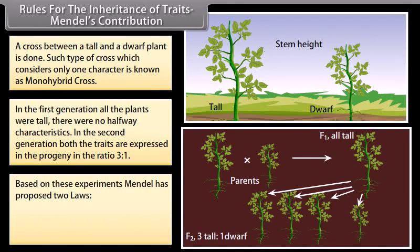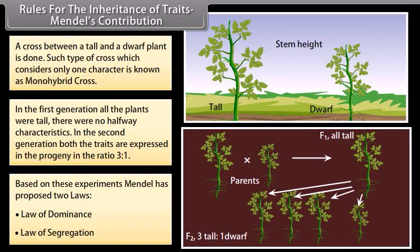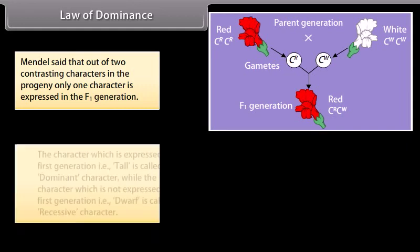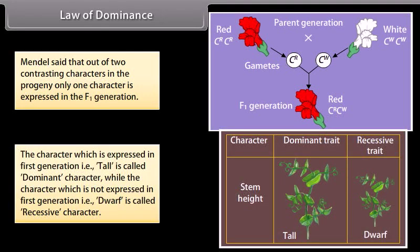Based on these experiments, Mendel has proposed two laws: Law of dominance and Law of segregation. Law of dominance: Mendel said that out of two contrasting characters in the progeny, only one character is expressed in the F1 generation. The character which is expressed in F1 generation, that is tall, is called dominant character. While the character which is not expressed in F1 generation, that is dwarf, is called recessive character.